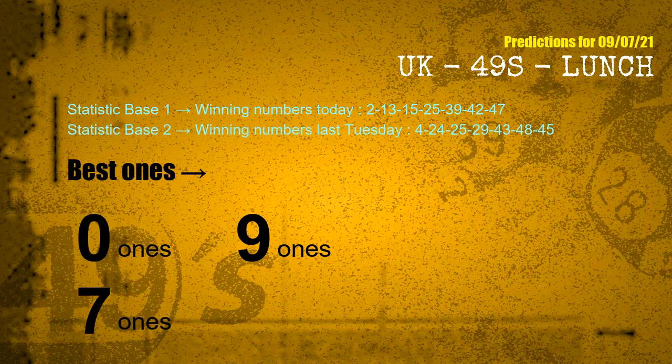According to the statistics above, with winning numbers today 02, 13, 15, 25, 39, 42, 47, and winning numbers last Tuesday 04, 24, 25, 29, 43, 48, 45 — the frequent following ones are 0-ones, 9-ones, and 7-ones.